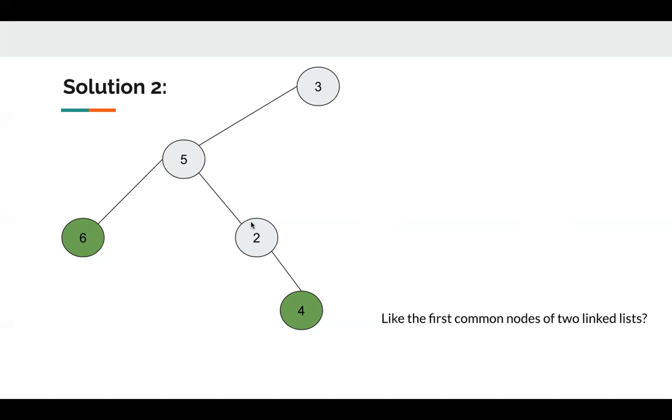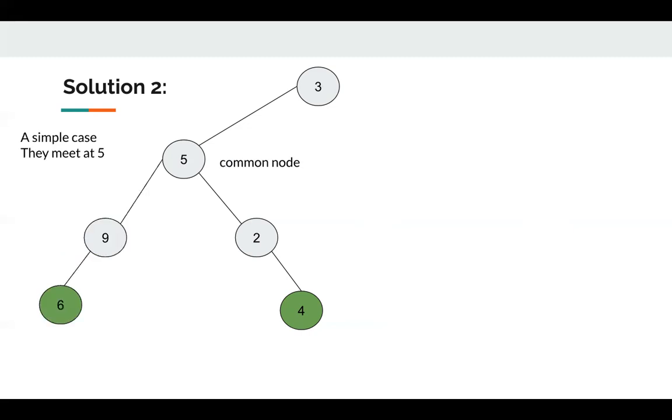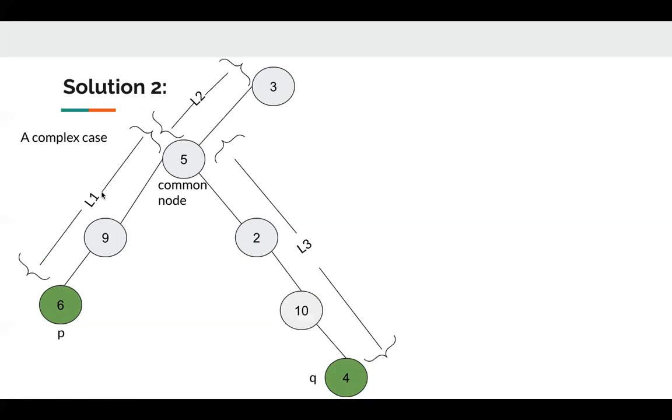But another solution here is that we can try to think about the simple case first. So we have node 4 and node 6. In each iteration, we move them to their parent, so when they are 5, we find the two nodes are the same, so we can just return it. A complex case is here. In this case, let's think about that. The distance from node P to common node is L1. The distance from common node to root is L2. The distance from Q to common node is L3.